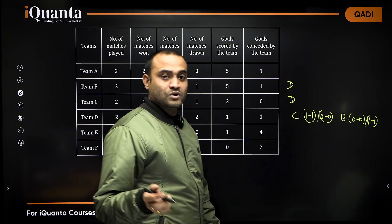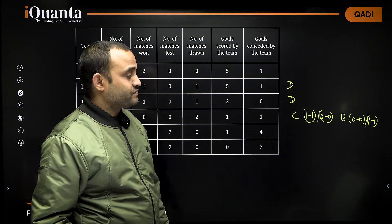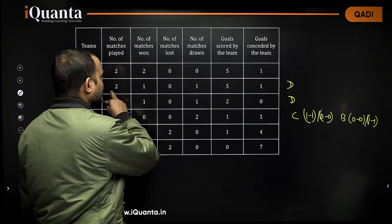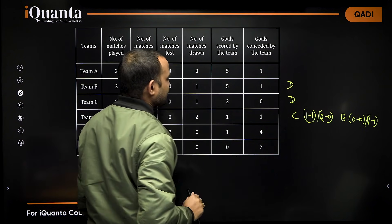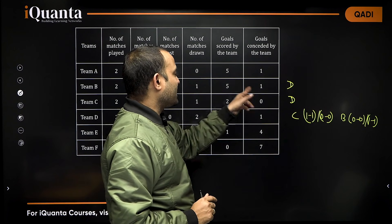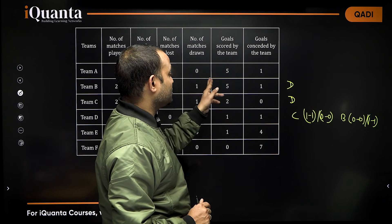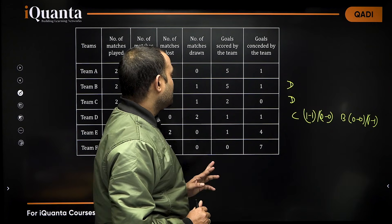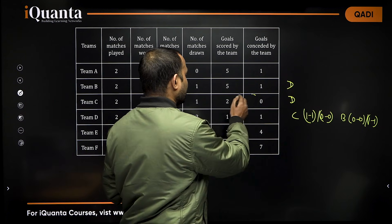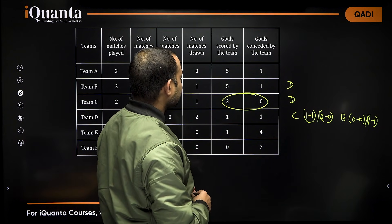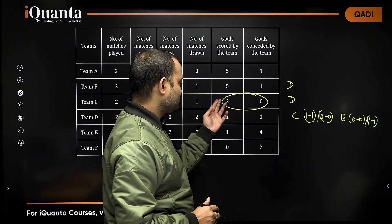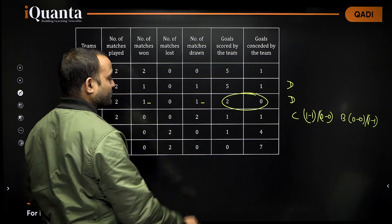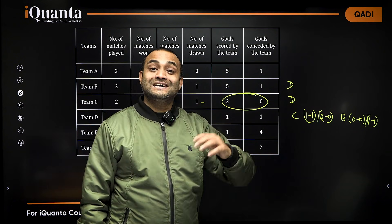In case of team B, we can say that team B has total goals scored versus conceded of 5-1. So, it can be 1-1 and 4-0, or 0-0 and 5-1. Both are possible. In case of team C, the total score line is 2-0. Team C has won one match and drawn one match, which means team C did not concede any goal.